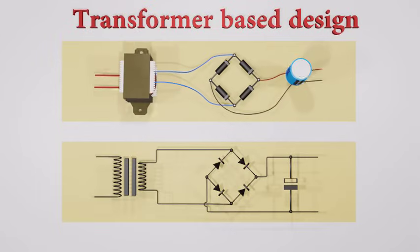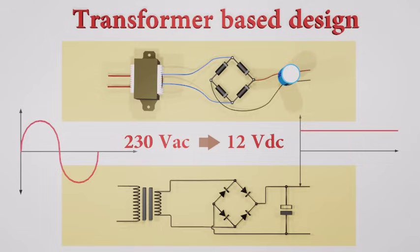Let's discuss how to convert 230 AC into desired DC value. In this video, we are describing a traditional transformer based design. For the ease of understand, we are going to convert 230 VAC into 12 VDC. It consists of four simple steps.